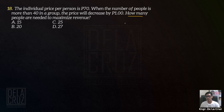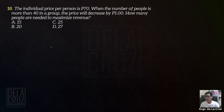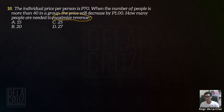Actually, the correct question here is how many people needed to be added more than the 40 in a group — yung dadagdag natin sa 40 na people para ma-maximize yung revenue. Dapat ganoon yung tanong kasi sa choices yan yung lalabas. So again, how many people are needed to maximize the revenue? It is a maxima-minima profit problem. You want to maximize the revenue.